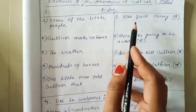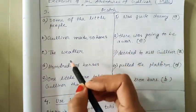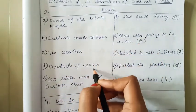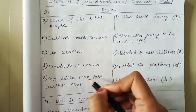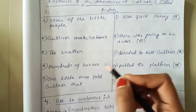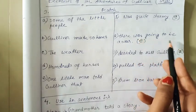The weather was quite stormy. Hundreds of horses pulled the platform. One little man told Gulliver that there was going to be a war.